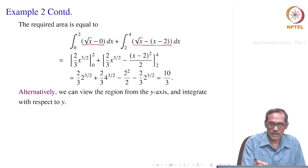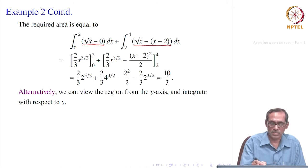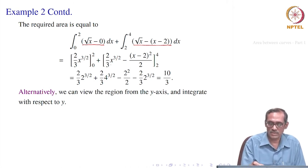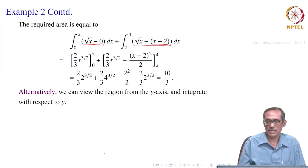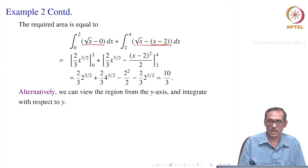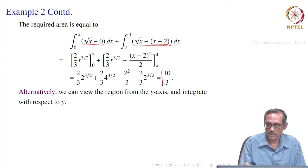For the first integral, √x integrates to (2/3)x^(3/2), evaluated at 0 and 2. For the second, √x integrates to (2/3)x^(3/2) and (x−2) integrates to (x−2)²/2, evaluated from 2 to 4. Adding the results gives the answer 10/3.